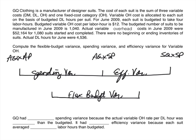Because it's overhead, we need to identify our cost driver. The problem tells us overhead cost is allocated on the basis of direct labor hours, so we're looking for labor hours. The actual quantity of direct labor hours is 4,536. For the actual price, we're not given it directly, but we're given the total actual variable overhead cost of $52,164. We can calculate the actual price by dividing $52,164 by 4,536 hours, which gives us $11.50 per hour.